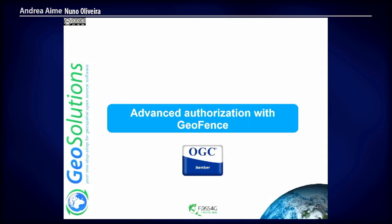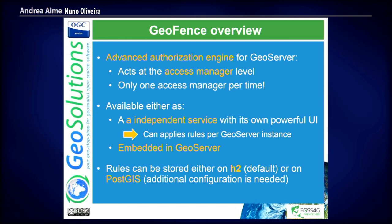This is not enough, because we have systems that want to define rules about what attributes the user can see, define a spatial filter on the data they can see, and not all users should see the same WMS styles. This is where GeoFence comes in — it's an advanced authorization engine for GeoServer. It deals with authorization only; it doesn't care about authentication. It exists in two modes: as an independent server and embedded in GeoServer. You only need the independent one if you want to define authorization rules per GeoServer instance in a cluster. If not, go with the embedded one. The recommendation is to use PostgreSQL for storing rules.